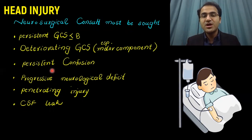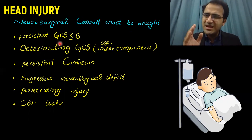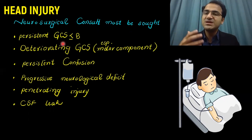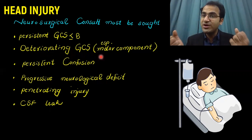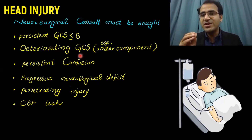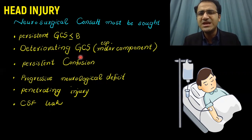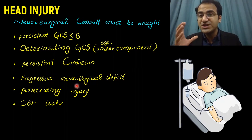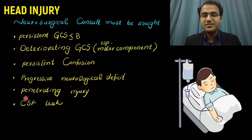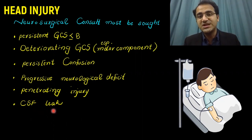A neurosurgical consult must be sought if there is a persistent GCS of 8 or less, a deteriorating GCS — especially the motor component where the patient is not responding to pain — progressive neurological deficit, persistent confusion, penetrating injury to the head, or CSF leakage.